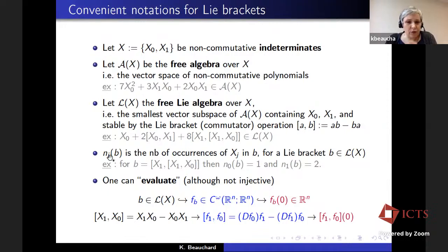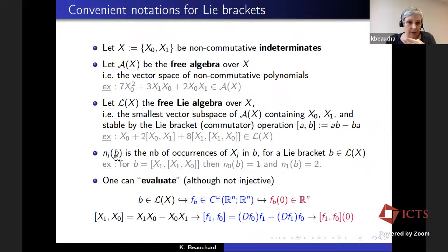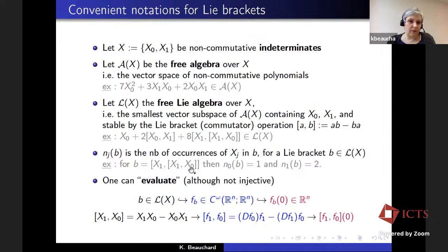An example of element of L of X is a linear combination of Lie brackets. It will also be convenient to have the functions n0 and n1 defined on iterated Lie brackets b, elements of L of X, which count the number of occurrences of the variables X0 and X1 inside b. For example, if b is a certain bracket, n0 is 1 because X0 is involved once, and n1 of b is 2 because X1 appears two times in b.